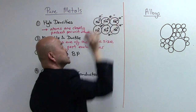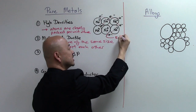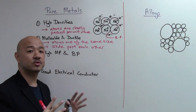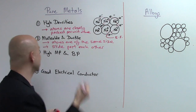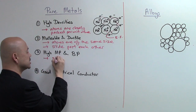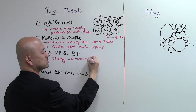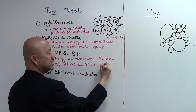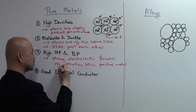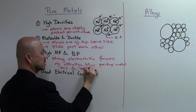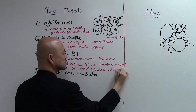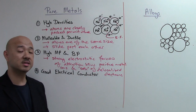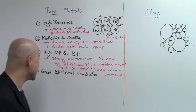These attractions are known as electrostatic forces, which are very strong. In the exam, you would write: 'strong electrostatic forces of attraction between the positive metal ions and the sea of delocalized electrons.' Because of this, a large amount of energy is required to overcome these strong forces, which is why metals have high melting and boiling points.